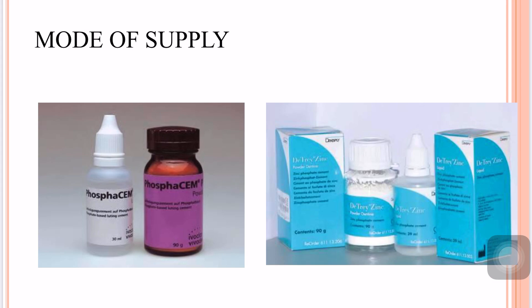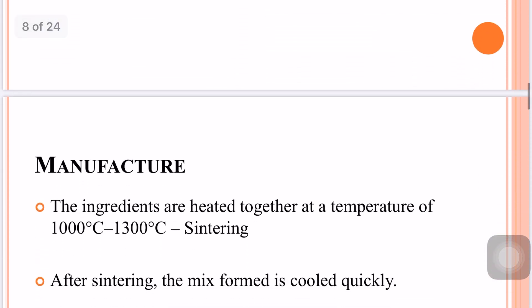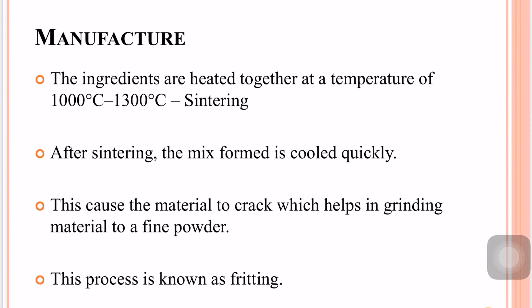Zinc phosphate is commercially available as powder and liquid form, and sometimes as a pre-capsulated form. In manufacturing, the ingredients are pre-heated together at a temperature of 1000 to 1400 degrees centigrade — a process called sintering. After sintering, the entire mix is cooled quickly, causing the material to crack, which helps in grinding it into a fine powder. This entire process is called fritting.